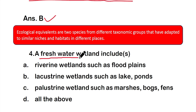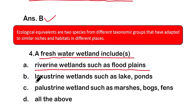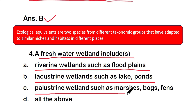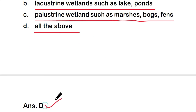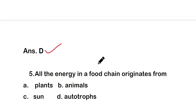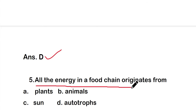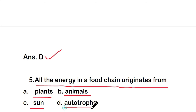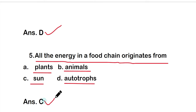Question four: Freshwater wetland includes — option A: riverine wetlands such as floodplains; option B: lacustrine wetlands such as lakes and ponds; option C: palustrine wetlands such as marshes, bogs, and fens; or option D: all of the above. The right answer is option D — all of the above are freshwater wetlands. Question five: All the energy in food chains originates from — option A: plants, option B: animals, option C: sun, option D: autotrophs. The right answer is option C, the sun.